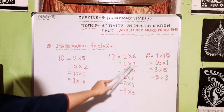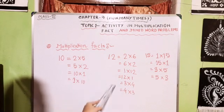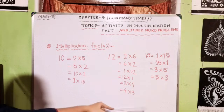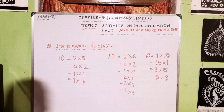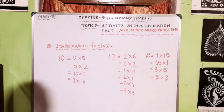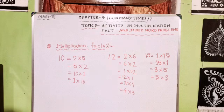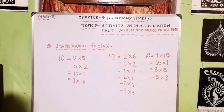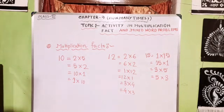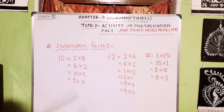For 12: 2 sixes are 12, 6 twos are 12, 1 twelve is 12, 12 ones are 12, 3 fours are 12, 4 threes are 12. So here I have written 6 ways — in 6 ways we can write 12. Also for 15, there are 4 ways we can write 15. These are called multiplication facts.